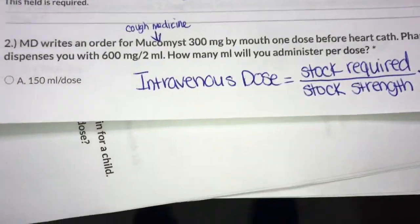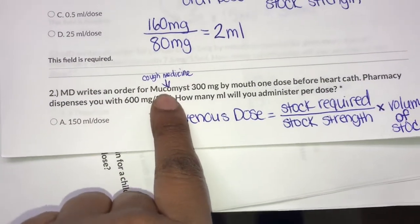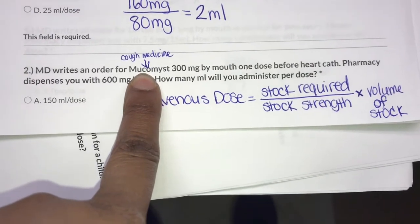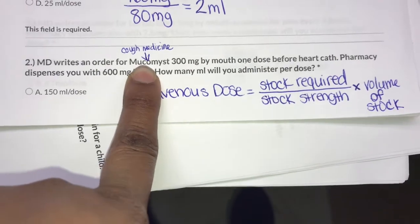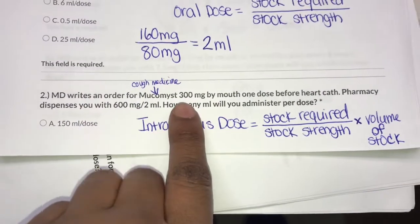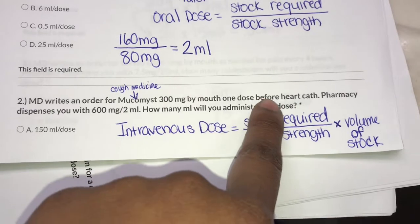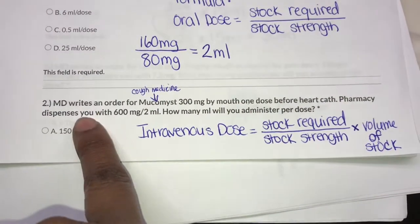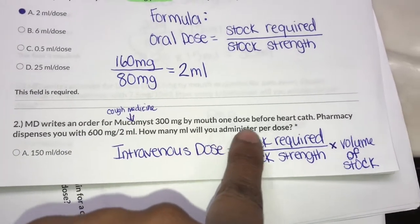Question two: the MD writes an order for Mucosal Mist — which is a type of cough medicine, anything pertaining to when you have a cold — 300 mg by mouth, one dose before hard cap. Pharmacy dispenses you 600 mg per 2 ml. How many mls will you administer per dose?